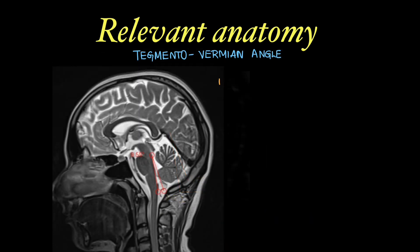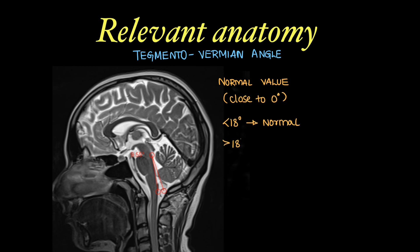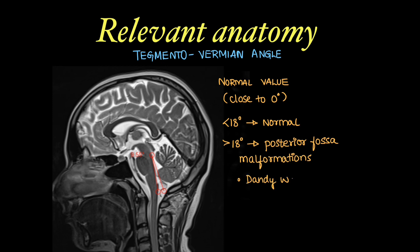The normal tegmento-vermian angle is supposed to be close to 0 degrees. In this image it is 9.55 degrees. The normal range is 0 to 18 degrees, and more than 18 degrees is seen in posterior fossa malformations like Dandy-Walker malformation.